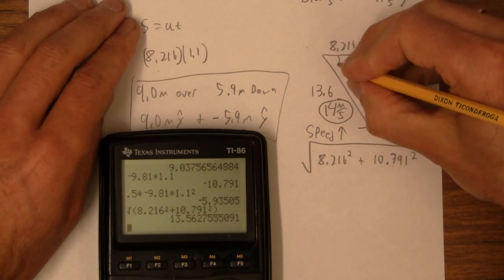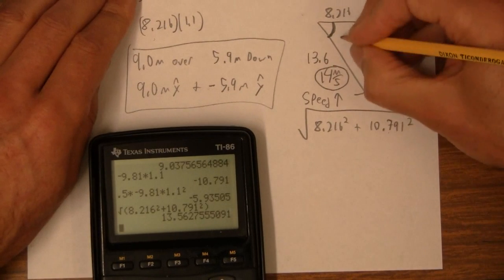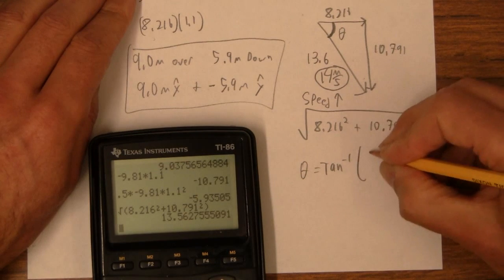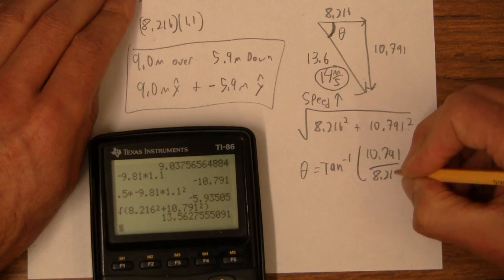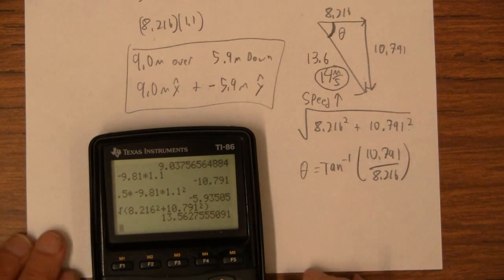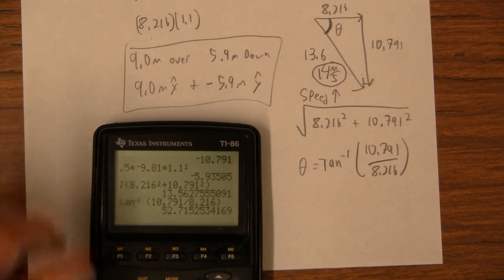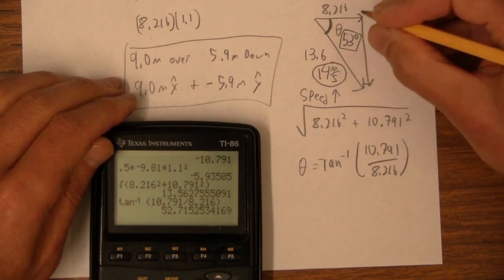And now let's find the angle so that it's a velocity vector, right? We've got to find the direction. Well, that angle right there is going to be tan minus 1 of 10.791 divided by 8.216. So inverse tan of 10.791 divided by 8.216. That's 52.7 or 53 degrees.